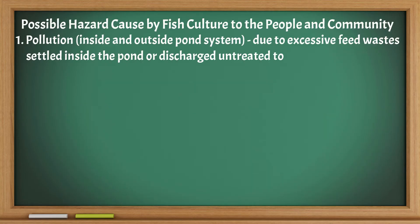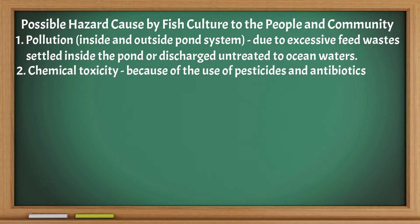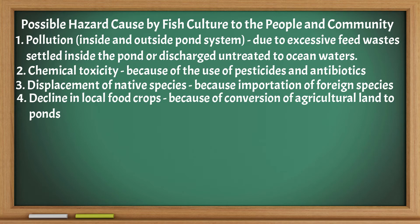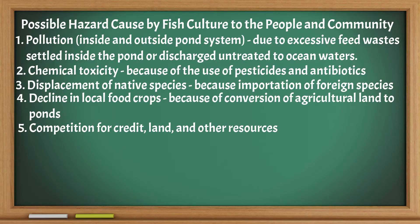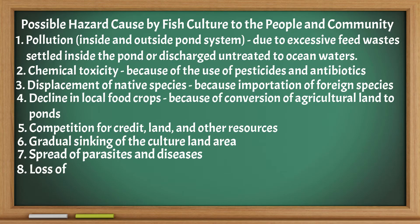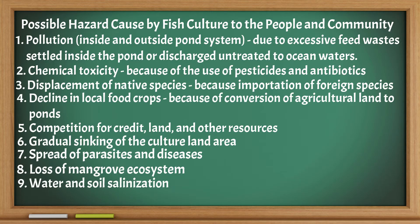Possible hazards caused by fish culture to the people and the community include: pollution inside and outside pond systems due to excessive feed wastes settled inside the pond or discharged untreated to ocean waters; chemical toxicity due to the use of pesticides and antibiotics; displacement of native species due to importation of foreign species; declining local food crops due to conversion of agricultural land to ponds; competition for credit, land, and other resources; gradual sinking of the cultural land area; spread of parasites and diseases; loss of mangrove systems; water and soil salinization; and public health risks.